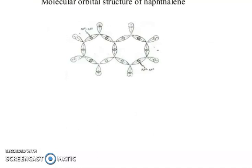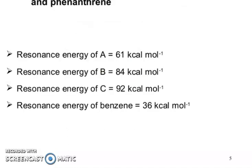This is the molecular orbital structure of naphthalene. Now, aromatic character of naphthalene, anthracene, and phenanthrene. Resonance energy of A is 64 kilocalories, resonance energy of B is 84 kilocalories, and resonance energy of C is 92 kilocalories per mole.